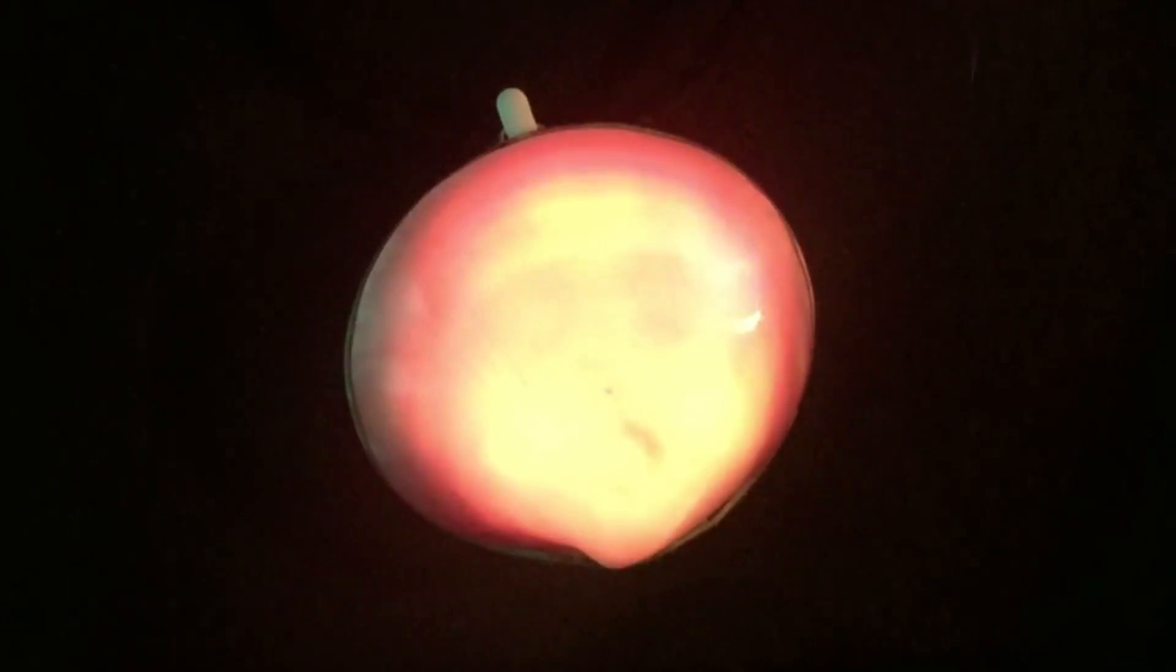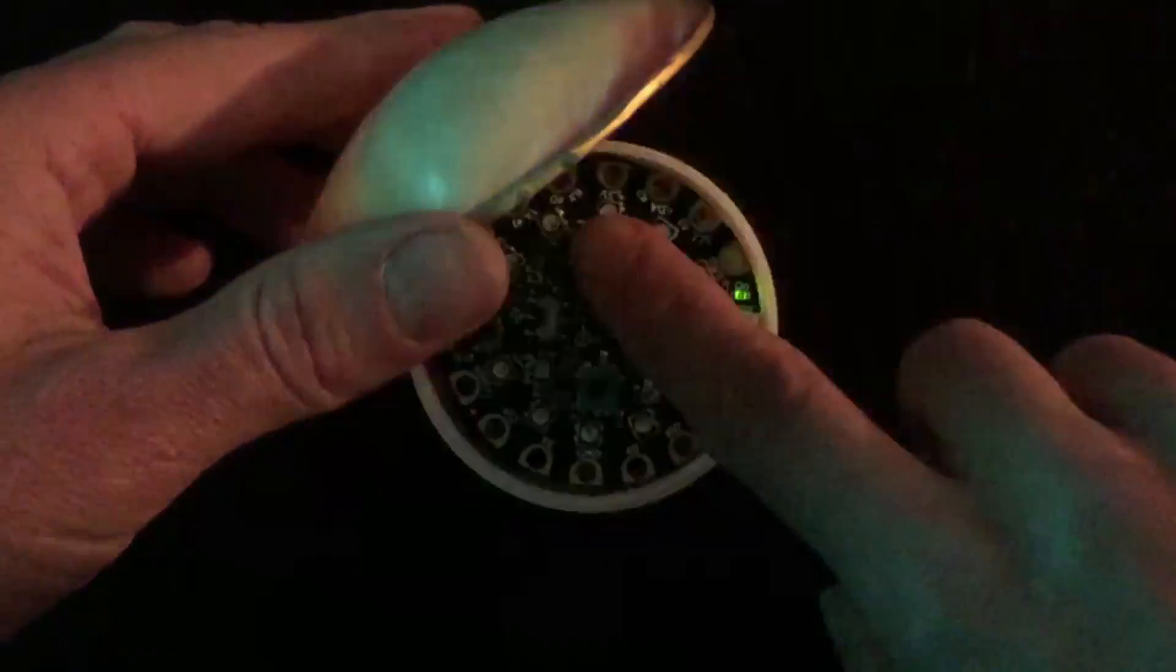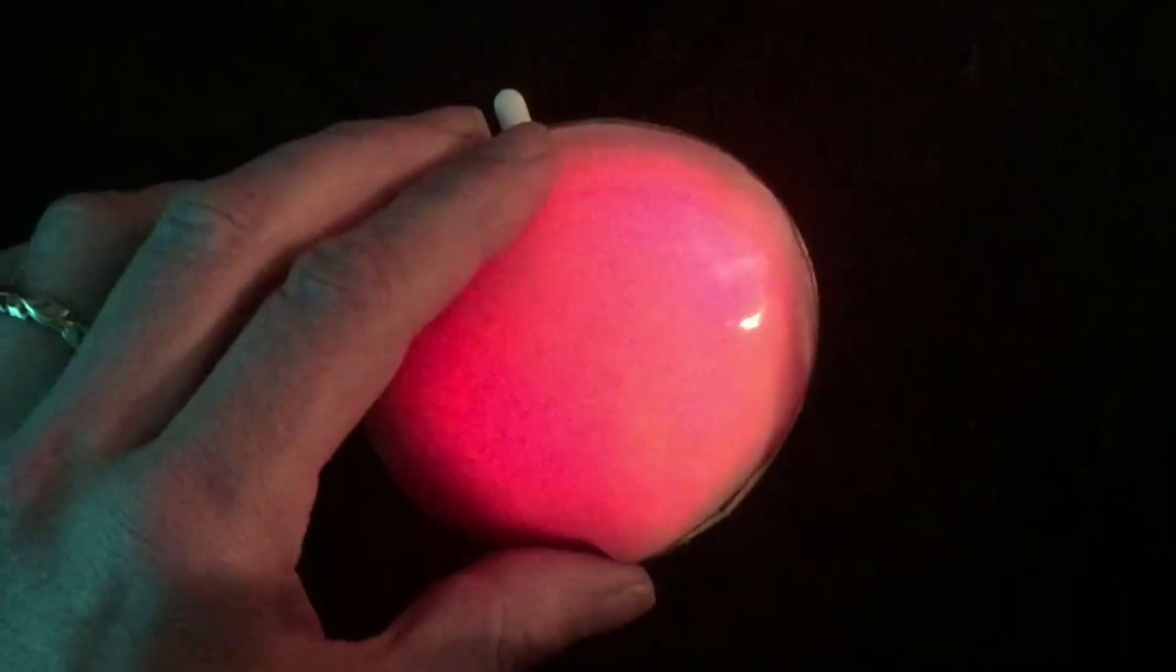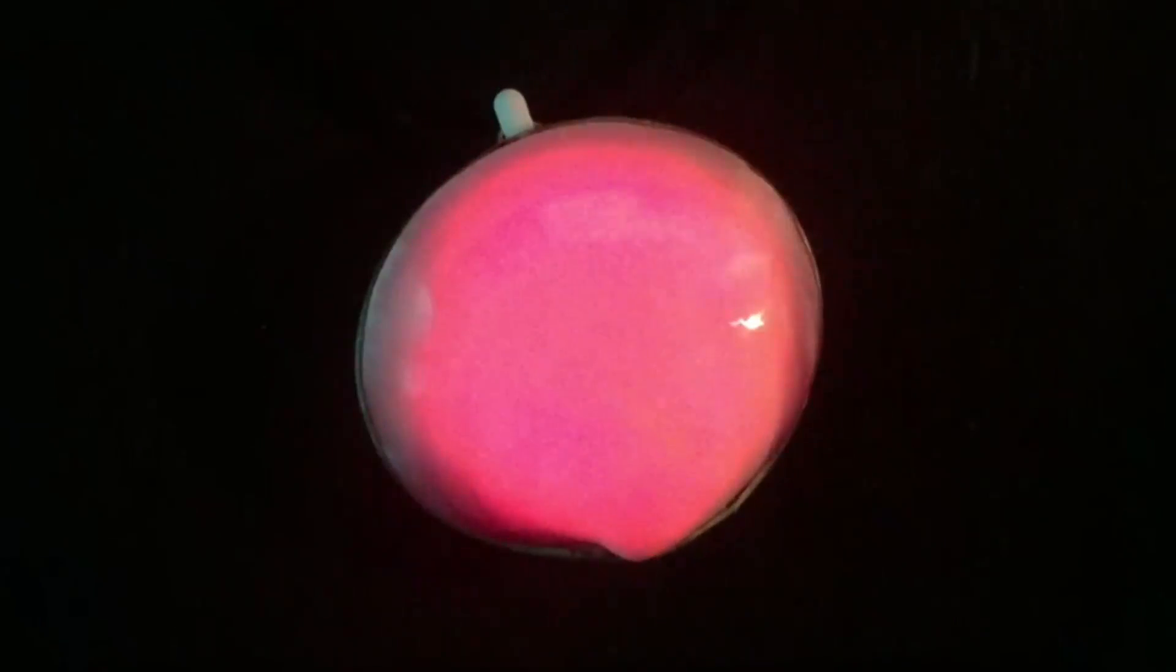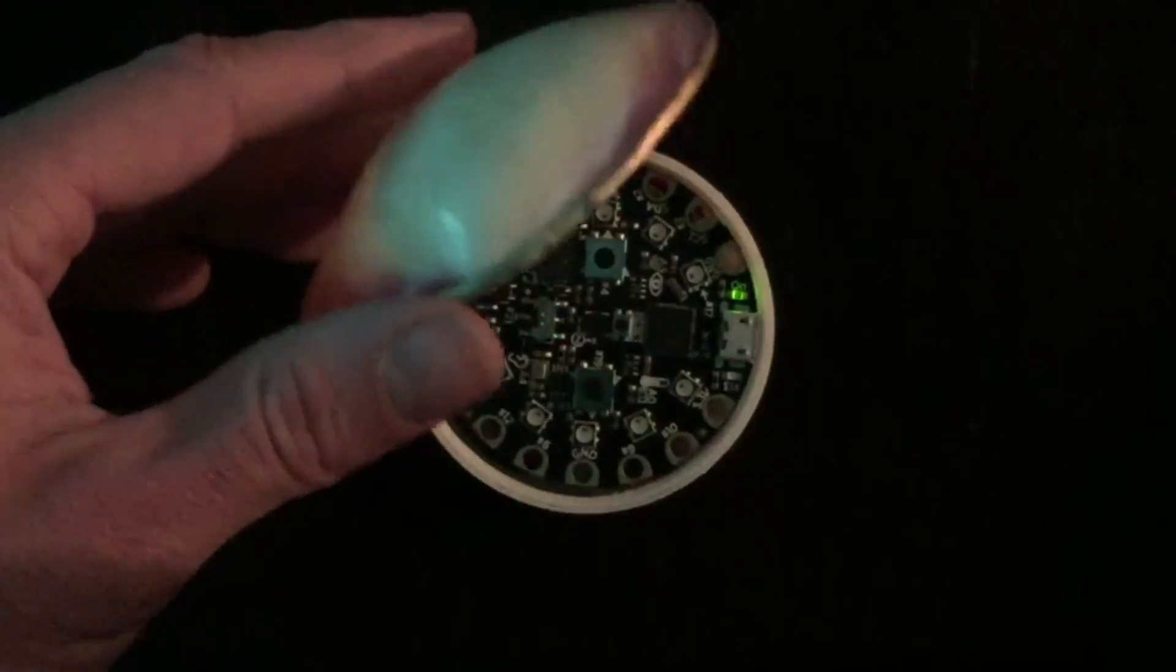The necklace opens like a locket. Press the left button on the Circuit Playground to choose a color palette. We've even included a sound reactive mode so the necklace will sing along with your voice.